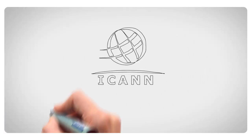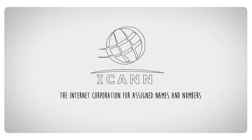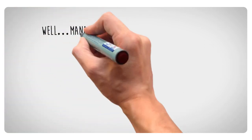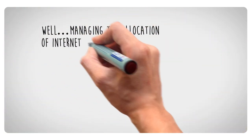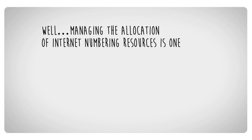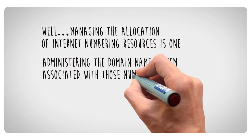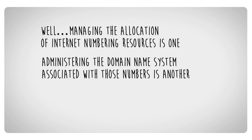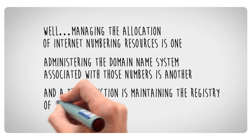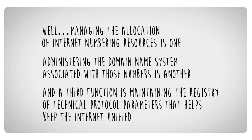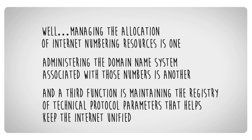Today, that job belongs to ICANN, the Internet Corporation for Assigned Names and Numbers. And what are the IANA functions? Managing the allocation of Internet numbering resources is one. Administering the domain name system associated with those numbers is another. And a third function is maintaining the registry of technical protocol parameters that helps keep the Internet unified.